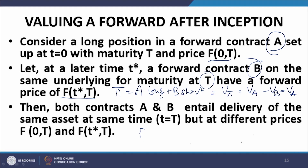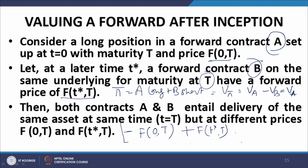The net cash flow from the portfolio at maturity is F(t*,T) − F(0,T), and the value of contract A at t=t* is the present value of this: e^(−R·(T−t*)) · [F(t*,T) − F(0,T)]. Let us look at an example to illustrate this.